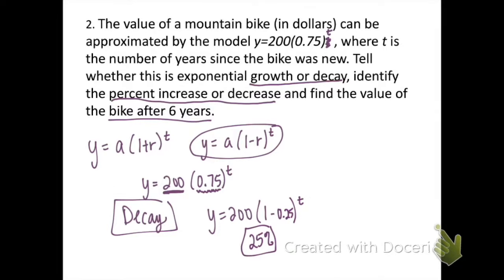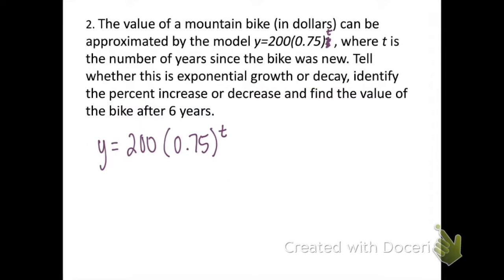The last part of the problem asks us to find the value of the bike after six years. So we're going to take the formula that they gave us. We know that the bike started with a value of $200 and it's decreasing by 25% each year. So we're just going to plug six in for t, put this all in our calculator, and we get our bike to be valued at $35.60 after six years of owning it.